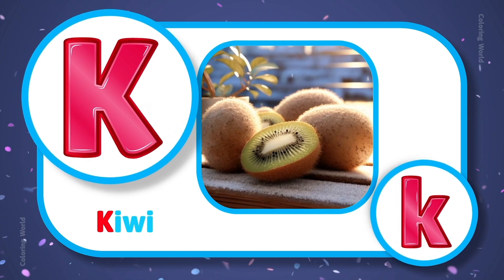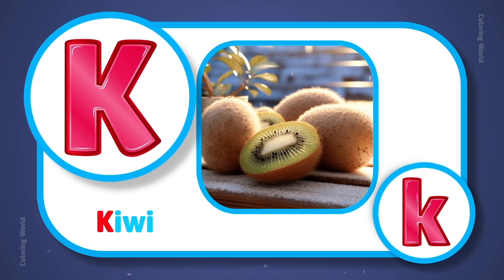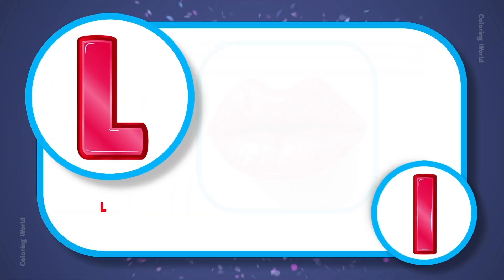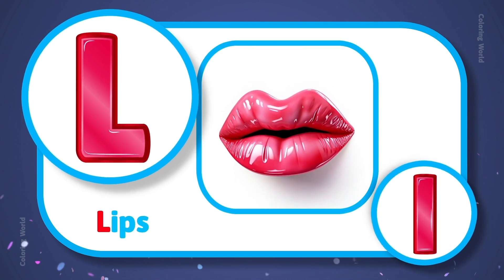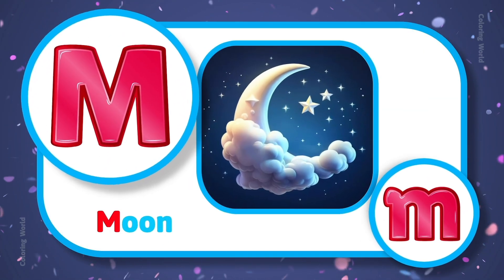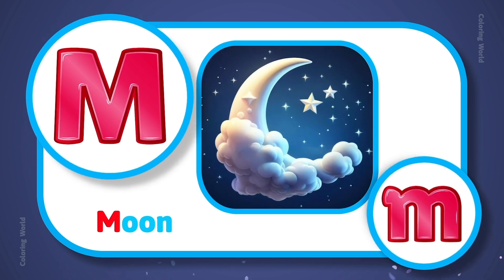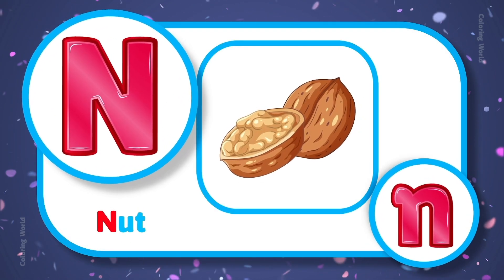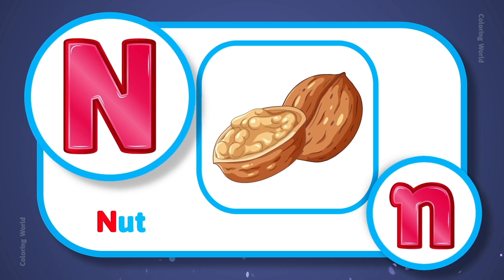K is for kiwi, K, kiwi. L is for lips, L, lips. M is for moon, M, moon. N is for nut, N, nut.